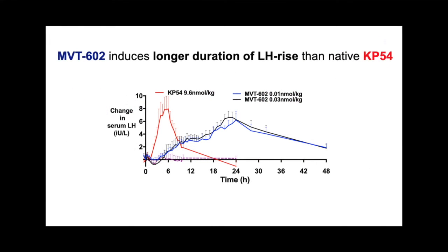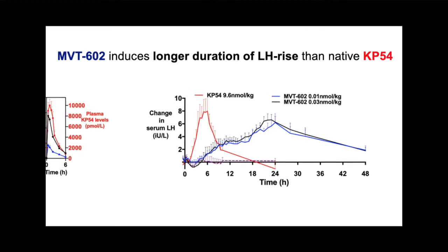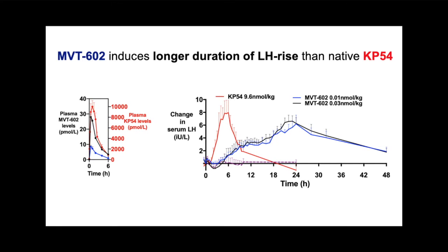We found that NVT602 induced a prolonged rise in serum LH, but to a similar amplitude as Kisspeptin-54, consistent with their common mode of action via the Kisspeptin receptor on hypothalamic GnRH neurons. This prolonged LH profile could have been attributed to a difference in pharmacokinetic properties between NVT602 and native Kisspeptin-54; however, pharmacokinetic parameters were in fact similar.